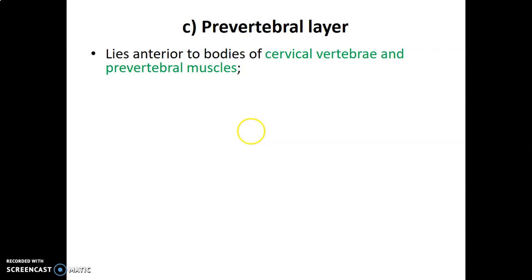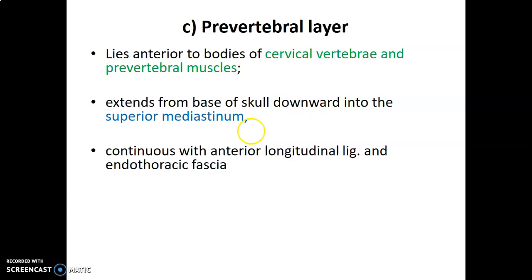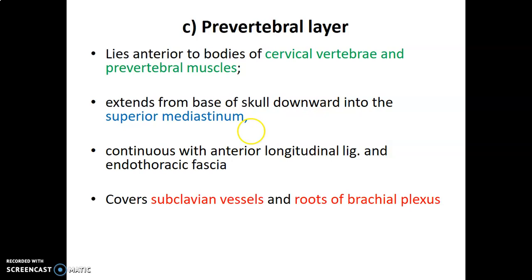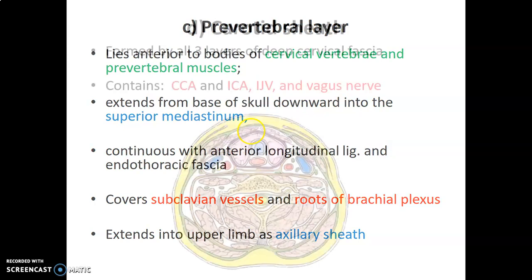The prevertebral layer encloses the cervical vertebrae and prevertebral muscles. It extends from the base of the skull to the superior mediastinum, and is continuous with the anterior longitudinal ligament and endothoracic fascia. This layer covers the subclavian vessels and roots of the brachial plexus, and extends into the upper limb as the axillary sheath.